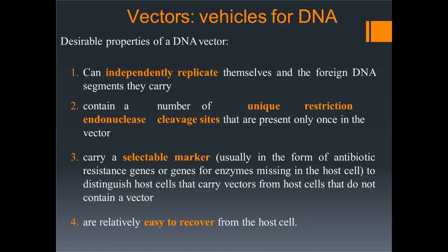Vectors are vehicles for the DNA — they carry your DNA of interest to the host system. These vehicles are themselves DNA fragments and they have three properties in common: they must independently replicate; they must have a unique restriction endonuclease site in them; and thirdly, they need to have a selectable marker. Additionally, you must be able to isolate that DNA from the host.